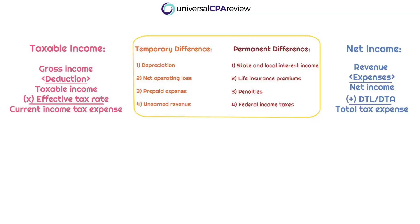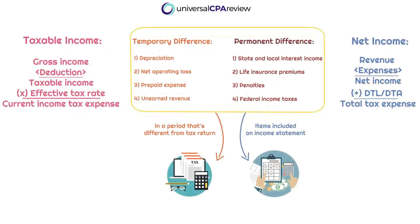At the end of the day, certain items are being included or excluded on the tax return that might not be on the income statement, so that is going to result in a different bottom-line amount. The Internal Revenue Code has a different framework and different rules than the FASB does for financial reporting. So if there are differences between the tax return and the income statement, this is what's going to result in what's referred to as a difference — a discrepancy that can either be considered a permanent difference or a temporary difference.